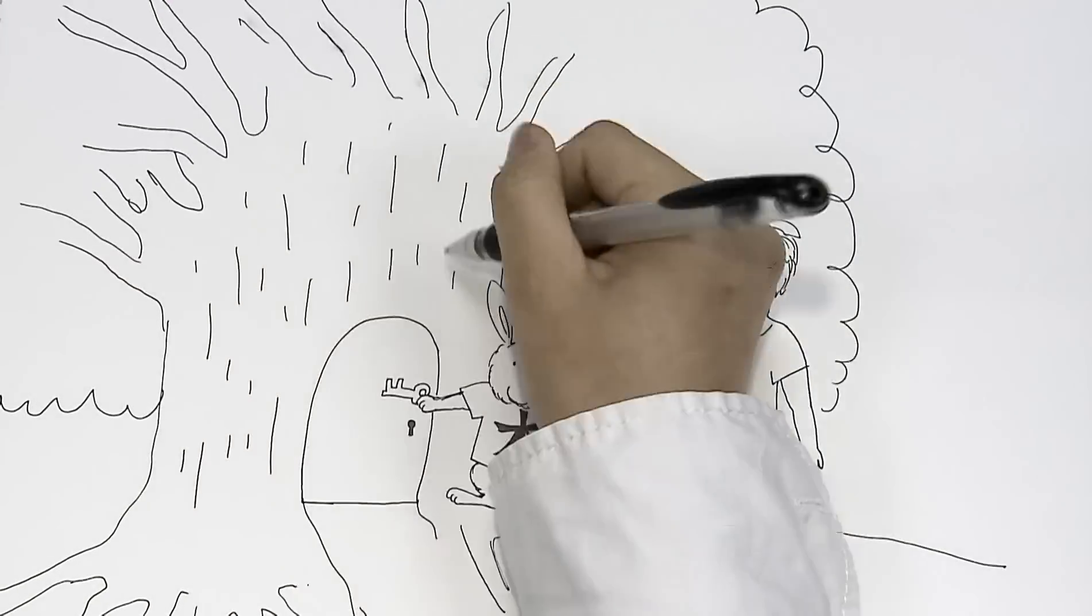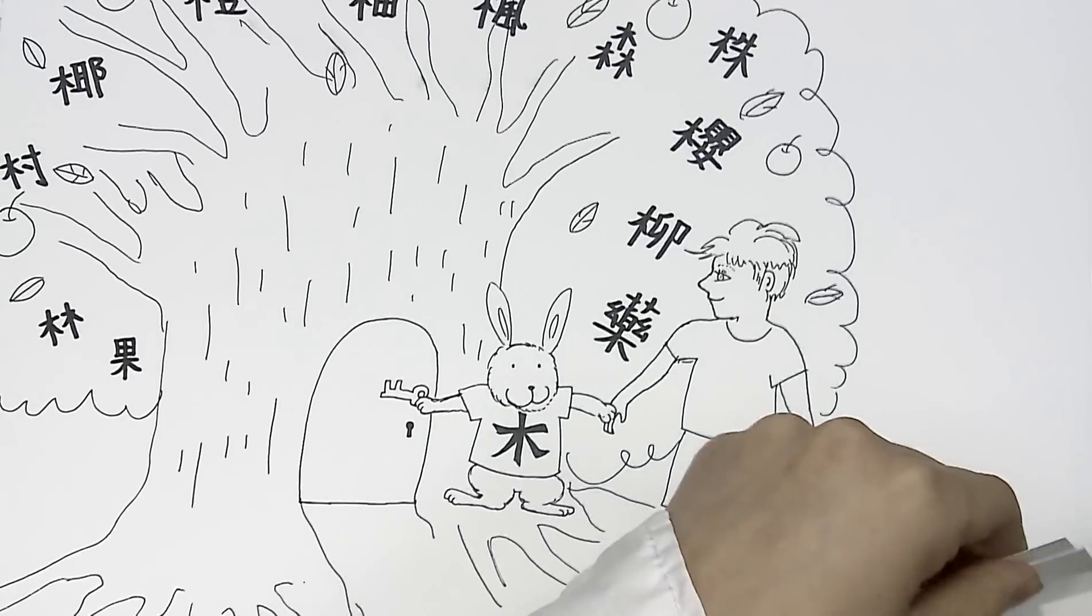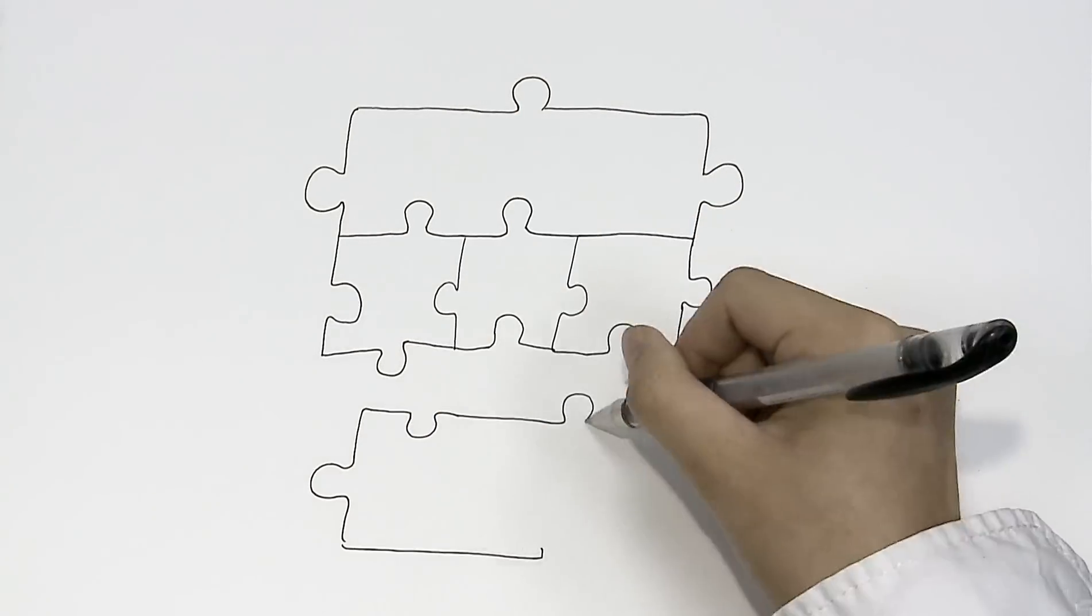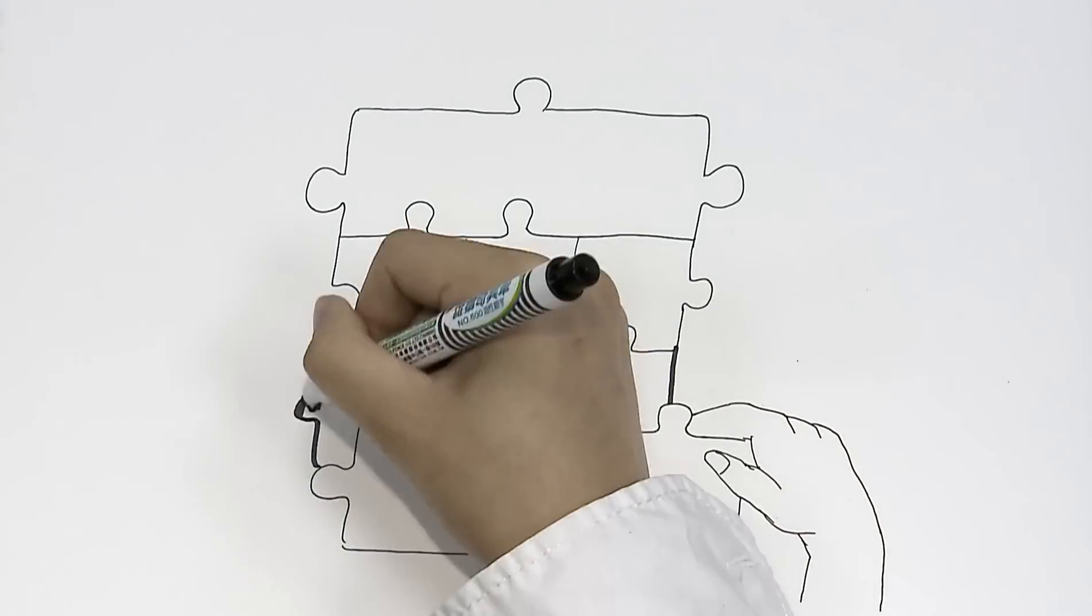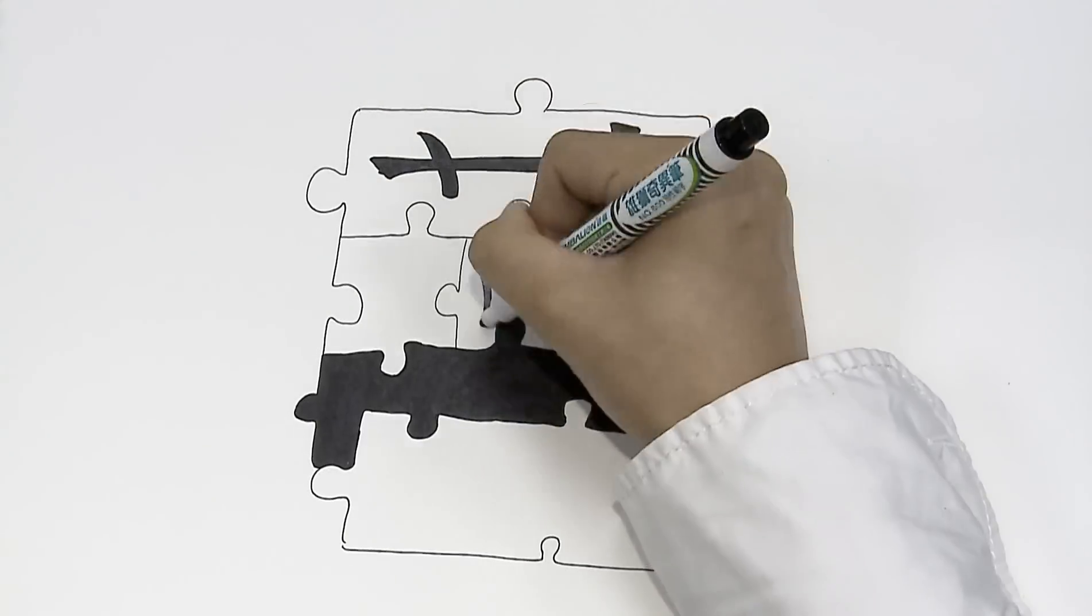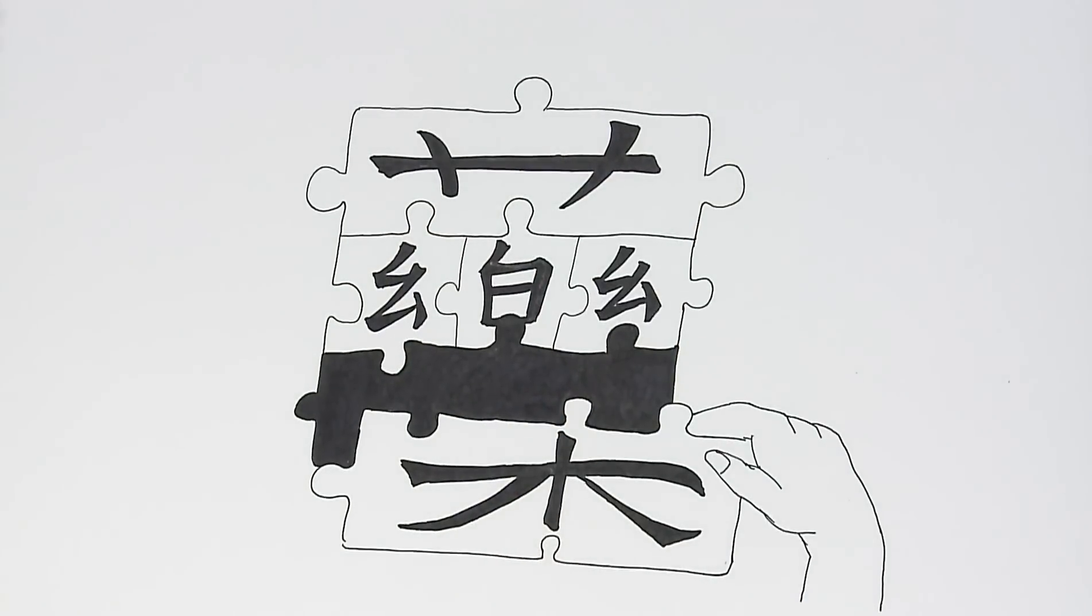As you successfully complete each level, you will discover every Chinese character the basic component appears in. Then, once you have learned all of the components that form a particular Chinese character, that character will be unlocked for you to learn. Also, you're earning points and trophies along the way, and you can track your friends and fellow students' progress.